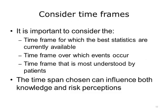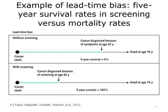A fourth best practice is to consider timeframes. When considering the timeframe to use when presenting risk or benefit information, it is important to consider the timeframe for which the best statistics are currently available, the timeframe over which events occur, and the timeframe that is most understood by patients. The time span chosen can influence both knowledge and risk perceptions. People often fail to adjust their risk perceptions to account for longer time spans. For example, people are more likely to increase their use of seatbelts if told they have a 33% lifetime risk of serious injury without seatbelts, compared with being told the much smaller risk of injury in a single trip. An example from screening illustrates some of the potential biases that may result when presenting statistics over time. Selecting and communicating a meaningful outcome is critically important, since this can have a major impact on risk perceptions.